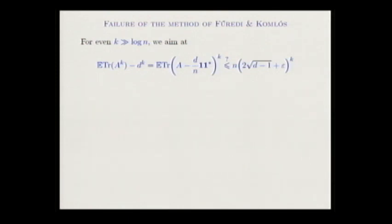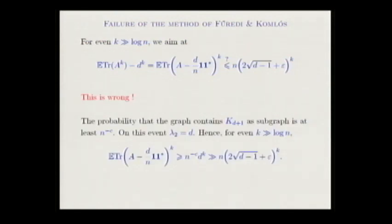Joe Friedman proved Alon's conjecture: if you take a uniformly sampled d-regular graph on n vertices with d at least 3, you are almost Ramanujan — eigenvalues cannot be much larger than 2 times square root of (d-1). It took 22 years to publish a proof. One obstruction is that the Furedi–Komlós method fails: a random d-regular graph may contain a clique of size d as a subgraph with polynomially small probability, which creates disconnected components and multiplicity ≥ 2 for eigenvalue d, making the trace bound fail.